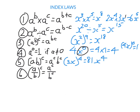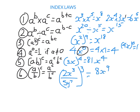Index law 6: a fraction raised to a power means raising the numerator and denominator separately to that power. Sometimes you need multiple index laws combined. For example, (2x³/5y⁷)³: first apply law 6 to raise numerator and denominator to the power of 3. For the numerator, apply law 5: 2³ × (x³)³. Then apply law 3: (x³)³ = x^(3×3) = x⁹. For the denominator: 5³ × (y⁷)³ = 125 × y^(7×3) = 125y²¹.